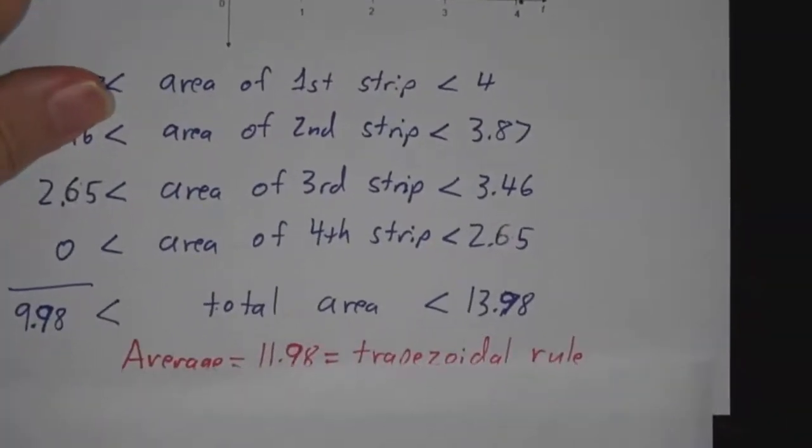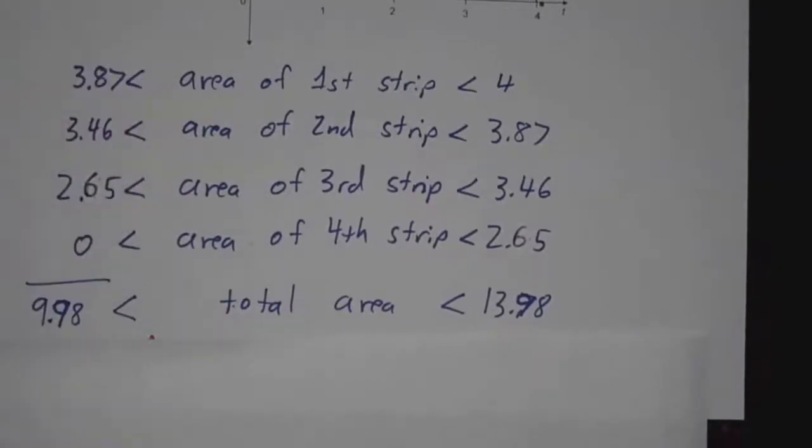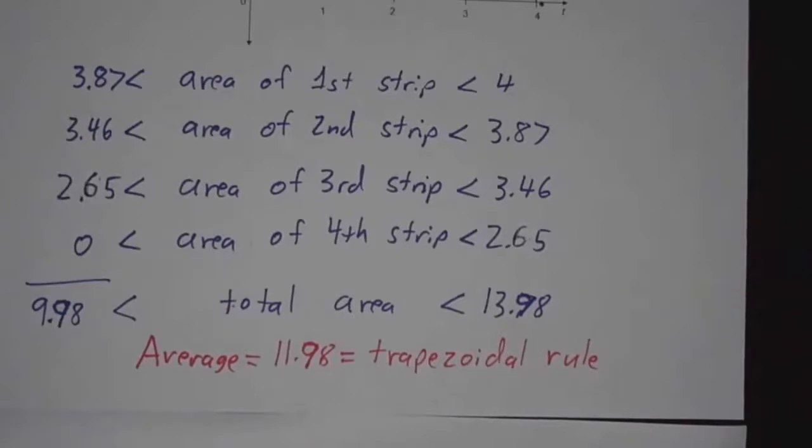Once again, we add things up, and our total area is somewhere between 9.98 and 13.98. And if you want the average, that's 11.98.